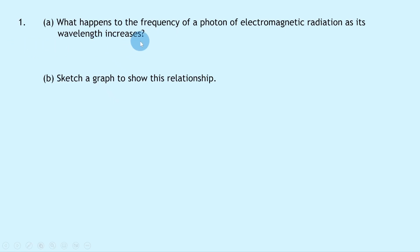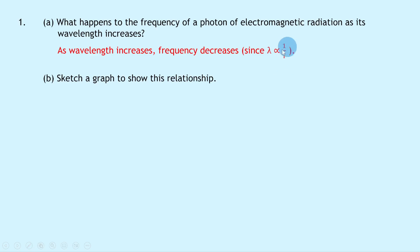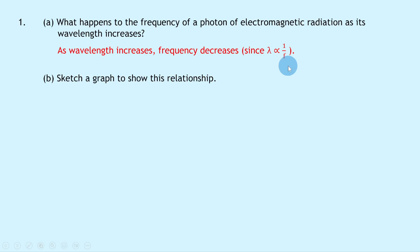Question 1a says: what happens to the frequency of a photon of electromagnetic radiation as its wavelength increases? Well, remember from National 5 Physics we saw that frequency and wavelength are inversely proportional. So as wavelength increases, frequency decreases, because wavelength is directly proportional to one over the frequency. So the bigger the wavelength, the smaller the frequency — or conversely, as wavelength decreases, frequency increases.